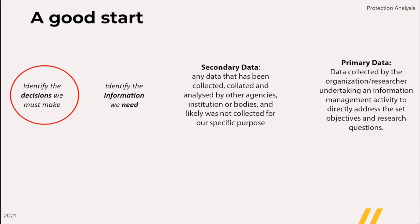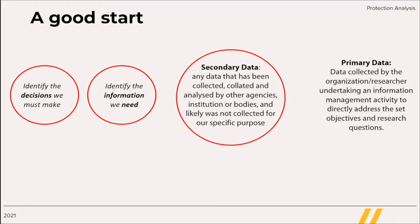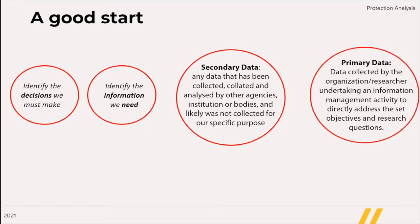Only once we identify the information needed, we will first look at what data are already available — secondary data. Secondary data refers to any data that has been collected, collated and analyzed by other agencies, institutions or bodies and likely was not collected for our specific purpose. We will then move to primary data collection to fill the gaps that secondary data could not cover. Primary data are data collected by the organization or researcher to directly address the set objectives and research questions. At this point, we look at sources and methods and select the most appropriate ones.